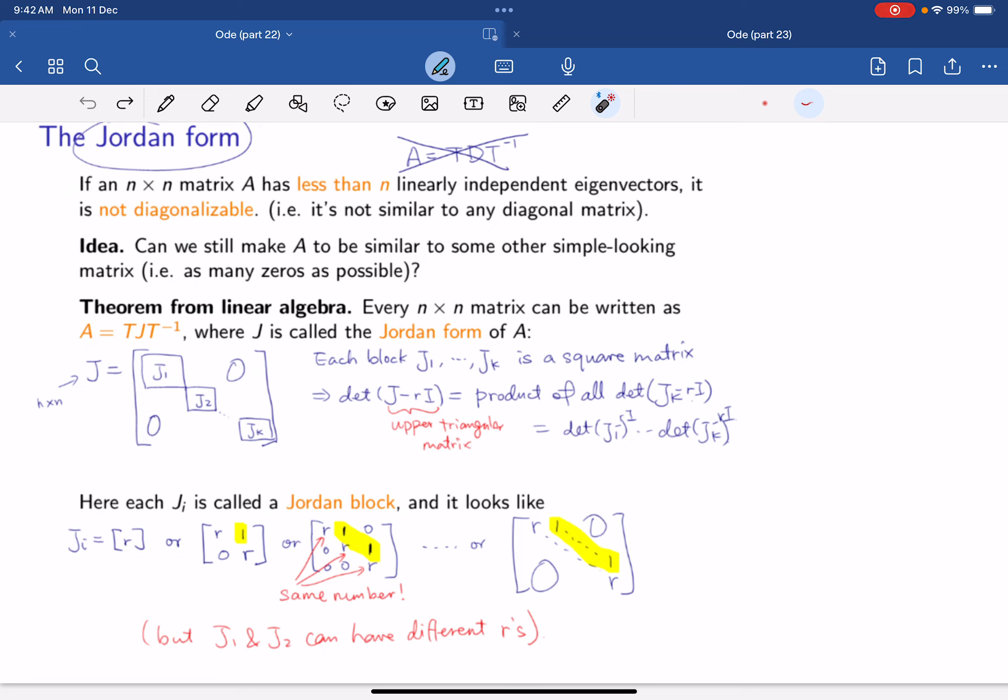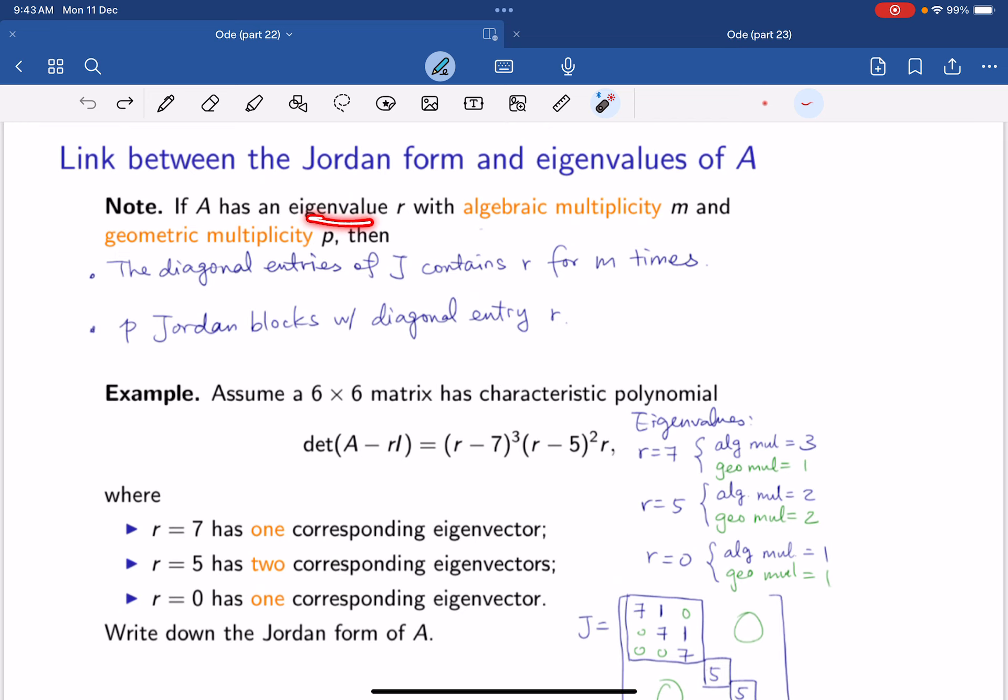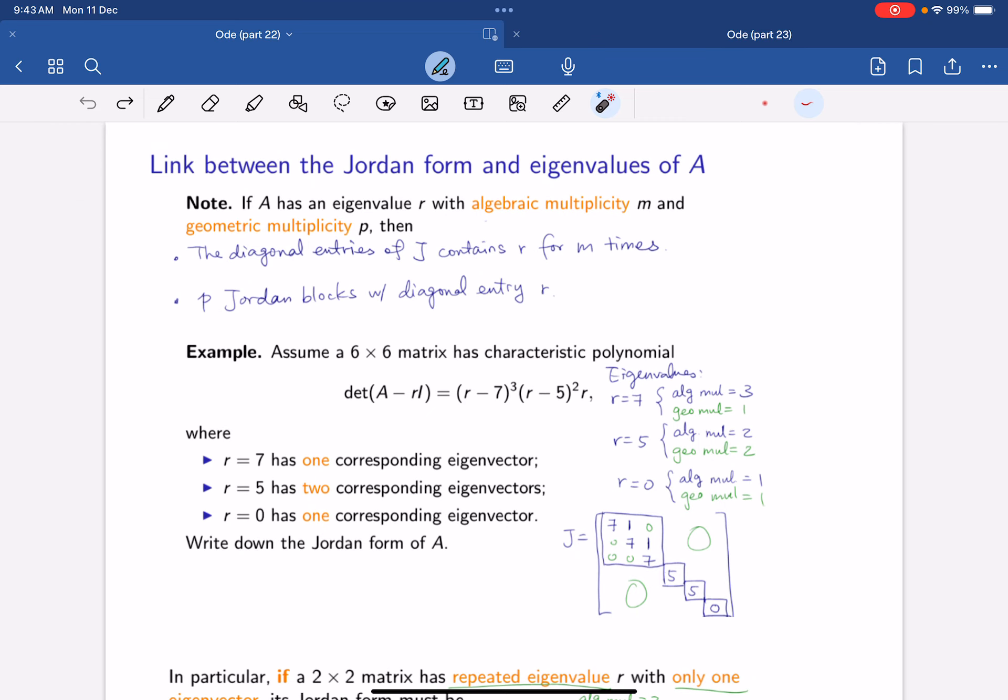You just take the determinant of A minus rI. So you find all the eigenvalues, and the eigenvalues with some multiplicity and geometric multiplicity. Then the diagonal entries of the J must contain this eigenvalue m times. What does it mean? Now, we will take an example later and show you. And then, there must be P Jordan blocks of diagonal entries R.